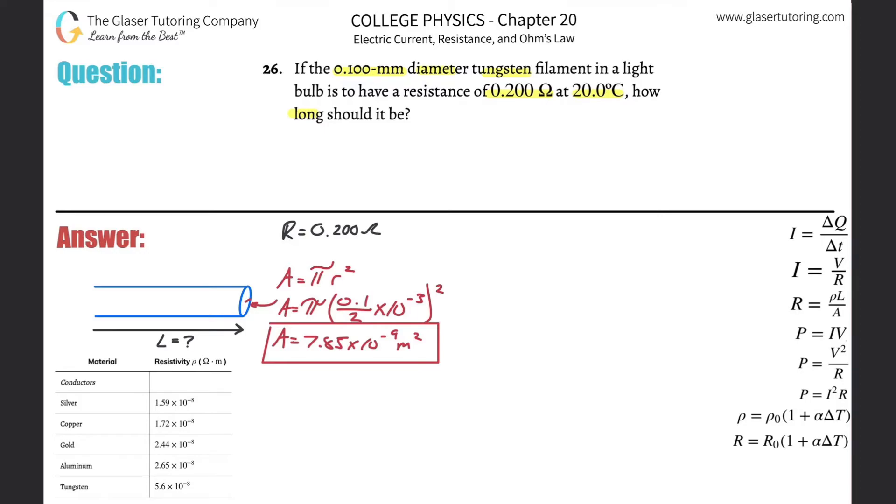We also know, again, the nature of the material—we have to look up the resistivity. So tungsten down here is going to be 5.6 times 10 to the minus 8. Now that is the resistivity at 20 degrees Celsius. Alright, all these values from this table—I know it doesn't say it up here—but they are at 20 degrees Celsius.